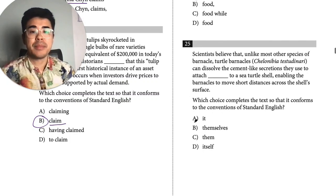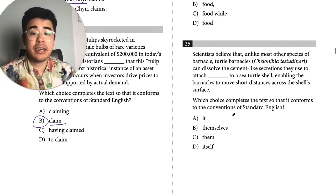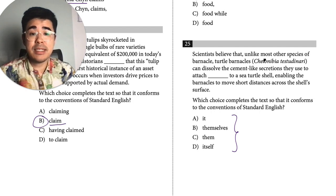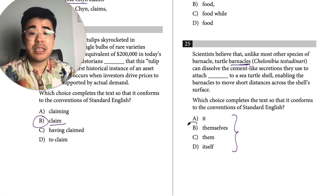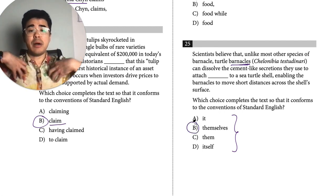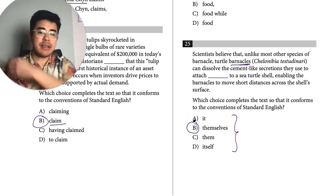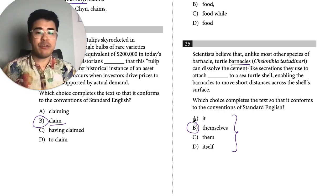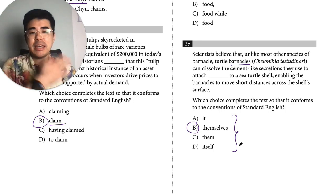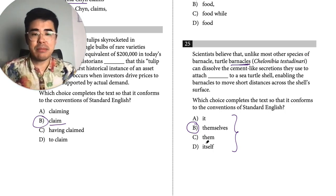Another it/it/they/they question. Unlike other species, turtle barnacles can dissolve the cement-like secretions they use to attach themselves — they're attaching their bodies. That's when you use the reflexive 'self.' I pat myself, I brush myself, I bathe myself. They are attaching themselves. There are many of them.